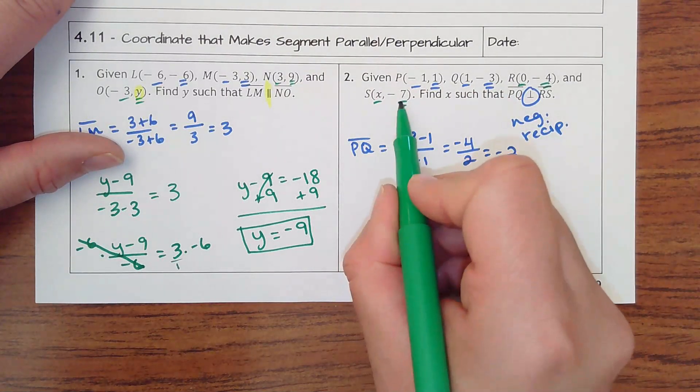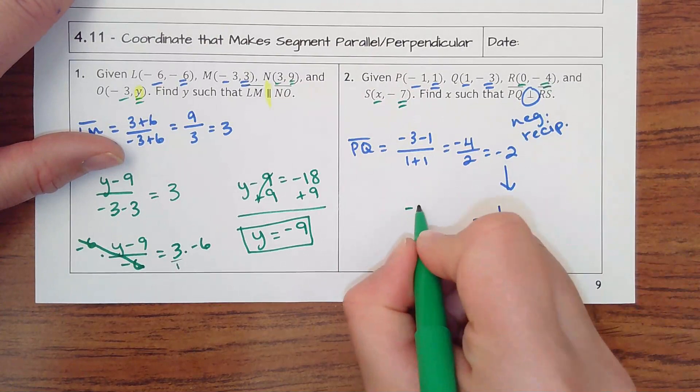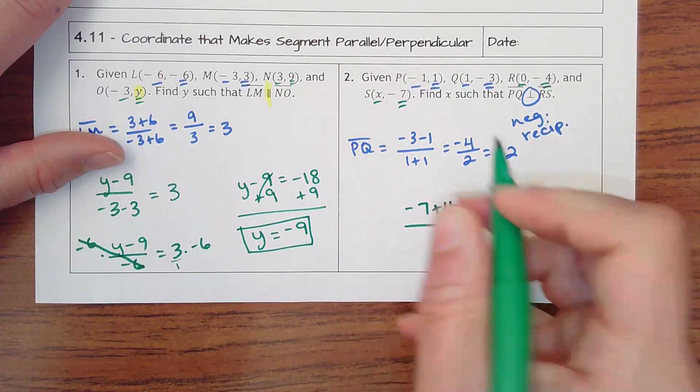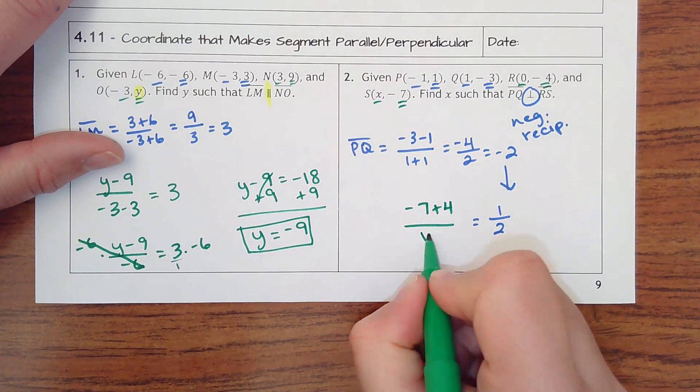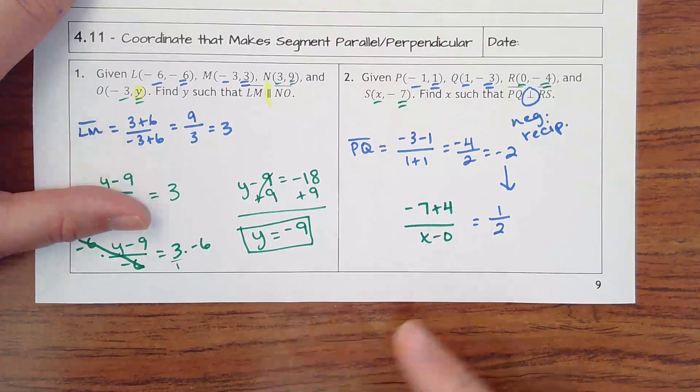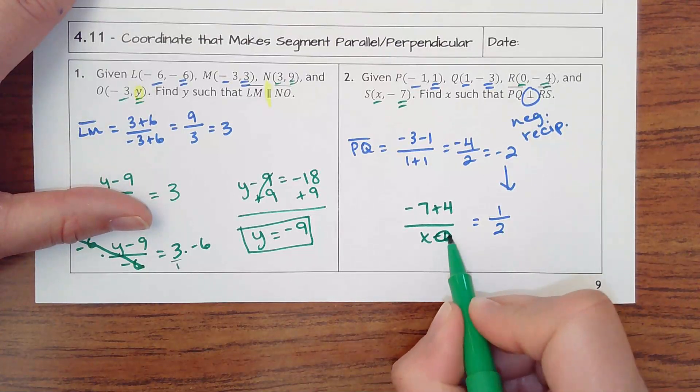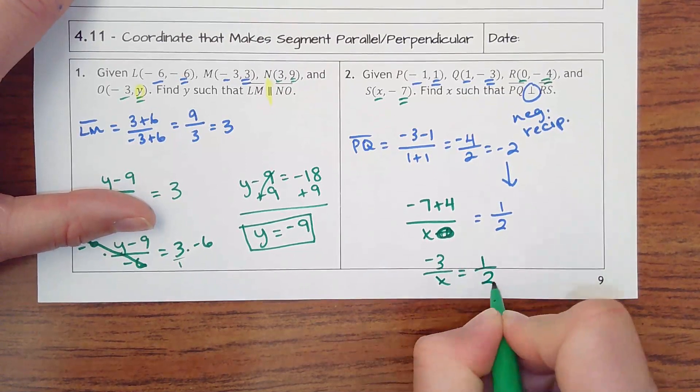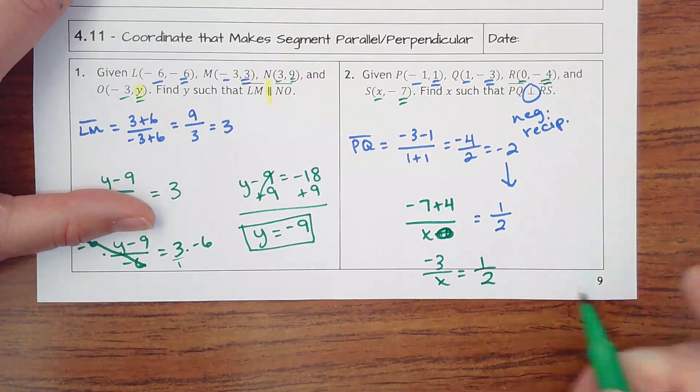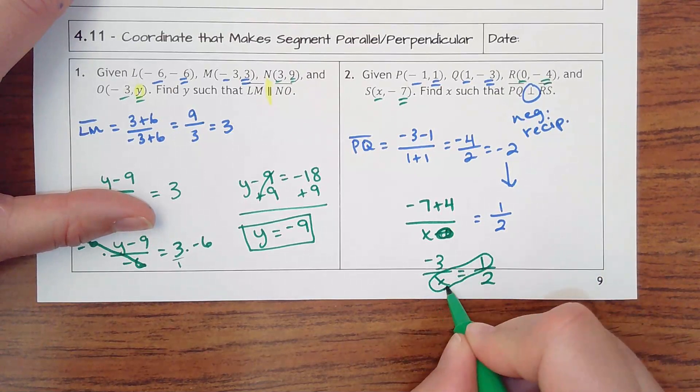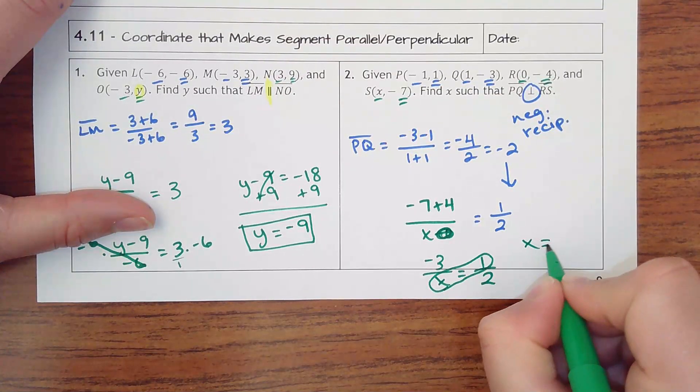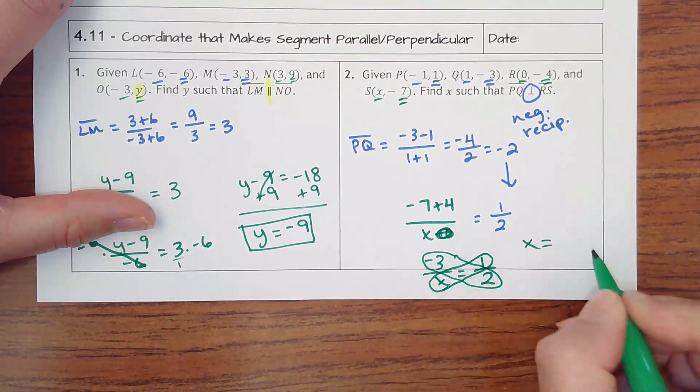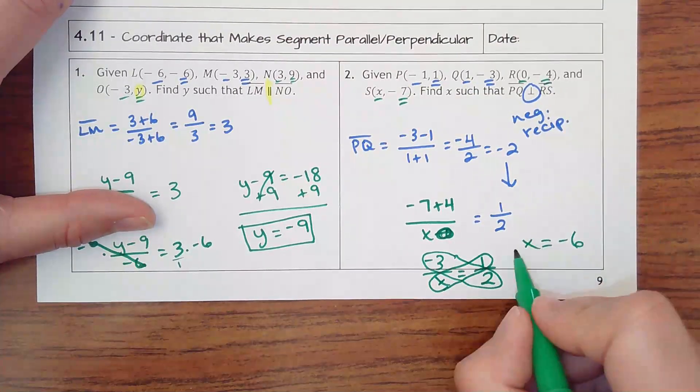So I'm going to do negative 7 plus 4 over X minus 0. Lucky for me, that's going to just go away. So negative 7 plus 4 is negative 3 over X equals 1 half. This really is a proportion where I want to cross multiply. So 1 times X is 1X or X. Negative 3 times 2 is negative 6. I have nothing to divide by, so X must be negative 6.